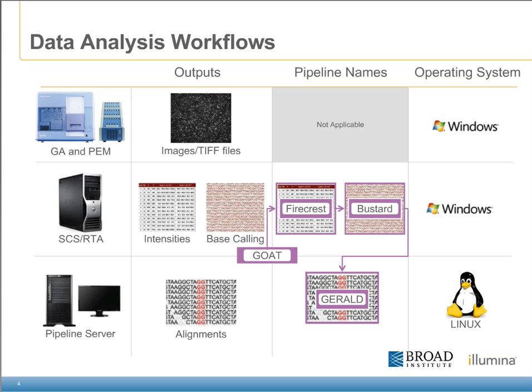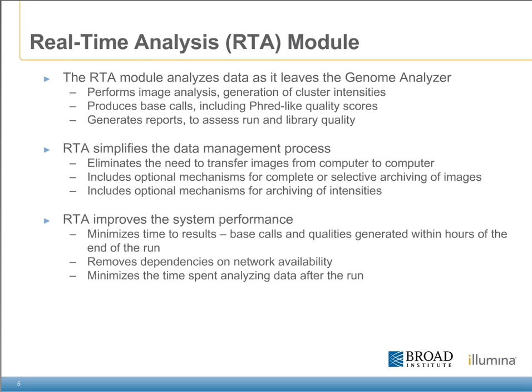The pipeline server package produces an output of alignments. This is currently available only for a Linux operating system. The real-time analysis module resides on the GA's attached PC and performs primary image analysis as well as generation of cluster intensities. Based on the resulting data, both base calls and FRED-like quality scores are assigned. RTA vastly improves the data management process as the primary analysis is done during the run in order to front-load a lot of the analysis tasks.